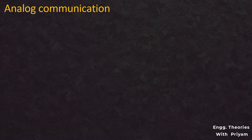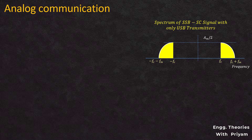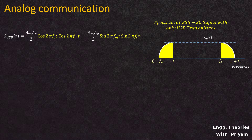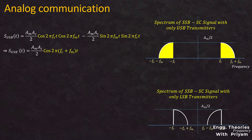Graphically, the upper sideband SSBSC modulated signal can be shown, and its equation is derived by taking AM·AC/2 as common and applying the formula cos(A)cos(B) minus sin(A)sin(B). Similarly, the lower sideband SSBSC modulated signal can be shown graphically and its equation can also be written.